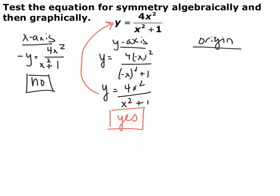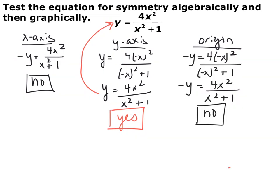The last one was origin symmetry, which says for every positive x you have a negative x, and for every positive y you have a negative y. Go ahead and pause the video and try to see if this has origin symmetry. We replace every x with negative x and every y with negative y and simplify. Negative x quantity squared becomes positive x squared, but there's nothing you can do with the negative y. So this does not have origin symmetry. For this equation, it only has y-axis symmetry. You always have to test all three because they could have zero, up to all three.